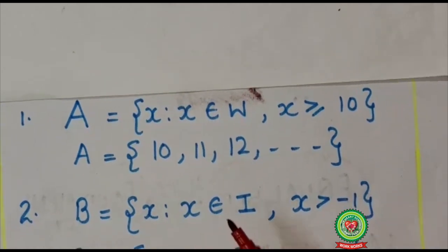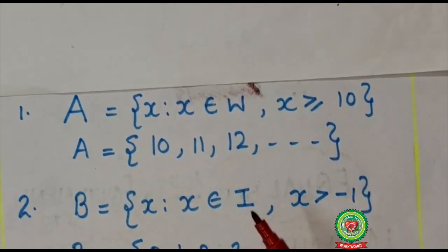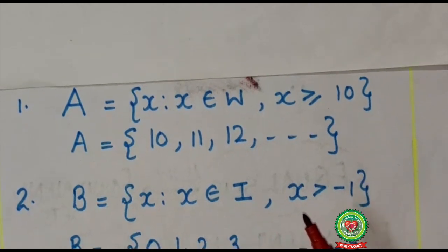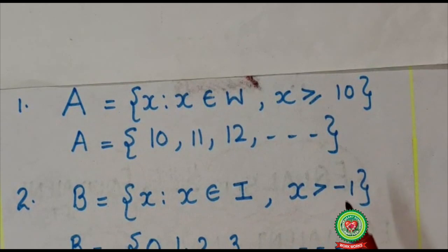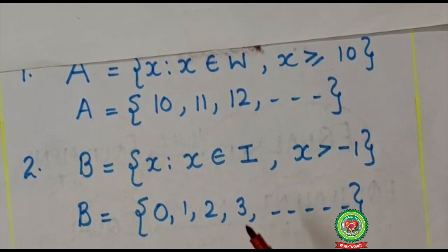Here B is x such that x ∈ I. I stands for integers. As we know, integers means all the positive and negative numbers including 0. Here one restriction is given that is x > -1. That means we will write in roster form from 0 and all the positive integers. Here I will write {0, 1, 2, 3, and so on}. Again, it shows that here counting will go endless. Therefore, it is also an infinite set.